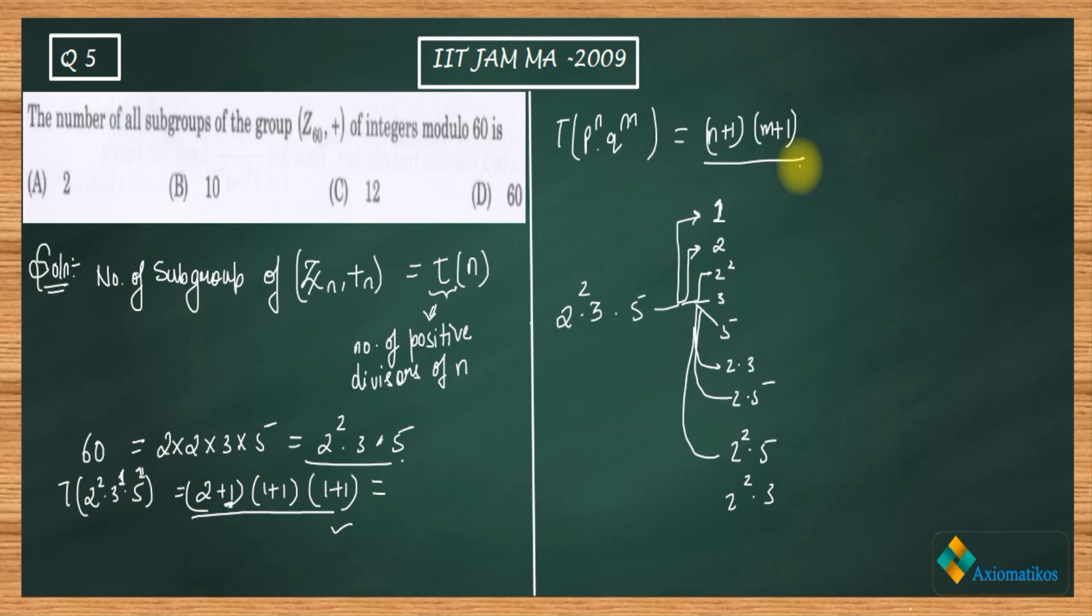For exam purpose, you can just remember this formula to obtain the number of divisors. I'm not going to prove this formula here because this is a solution video for a question. So what answer are you getting here? 3·2·2, so 12.